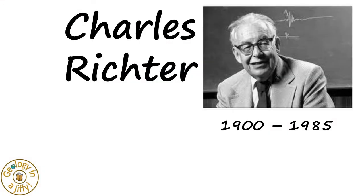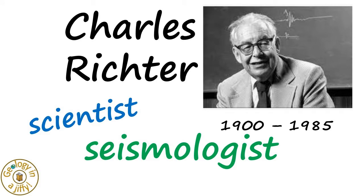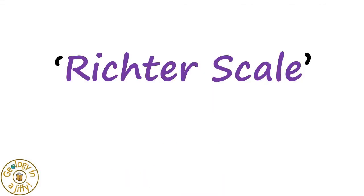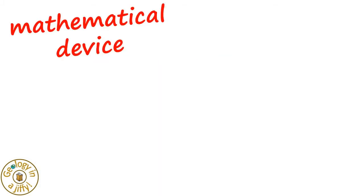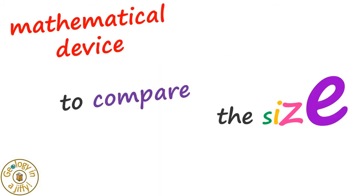Charles Richter was an American seismologist, a scientist who studied shockwaves made by earthquakes, who developed the Richter scale in 1935. The Richter scale is a mathematical device used to compare the size of earthquakes.